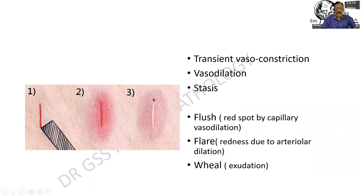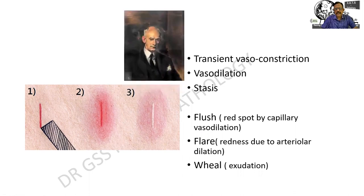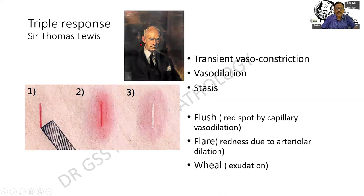When you strike your skin with a blunt instrument, you find that there is a play of colors that happens. Initially there is a transient vasoconstriction, then a vasodilation producing redness in the surrounding regions — we call it erythema. And finally, there is a stasis producing an edema. We call this flush, flare, and wheal. Flush is a red spot caused by capillary vasodilation. Flare is the redness due to erythema in the surrounding region as well. Wheal is the exudation producing the whiteness and the swelling. These were authored by Sir Thomas Lewis and it is called the triple response. This gentleman was a cardiologist, a neurophysician, and a physiologist — that is why he was able to correlate all three things together.